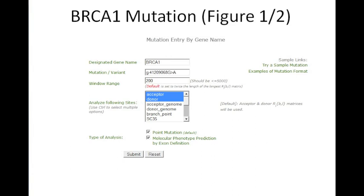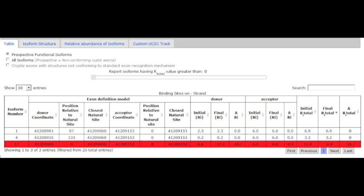Here is an example BRCA1 mutation, found in the plus one position of exon 20's natural donor. As you would expect from a plus one donor mutation, the natural site is abolished. There are two predicted cryptic exons, one 87 and another 133 nucleotides downstream from the affected donor site.